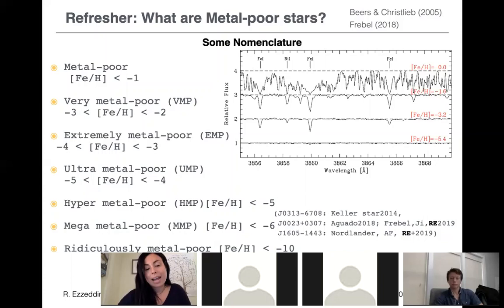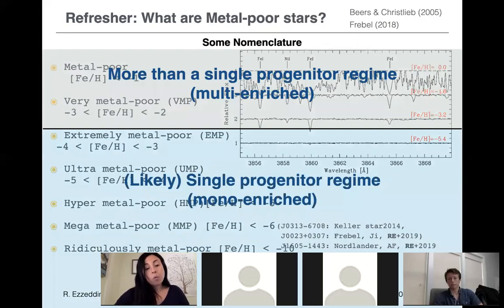The cosmos has gifted us with really nice mega metal-poor stars. For example, the Keller star discovered in 2014 had an upper limit of iron-to-hydrogen below minus seven. David Aguado discovered another one in 2018 that we followed up with high-resolution spectra. More recently, Thomas Nordlander discovered another mega metal-poor star with, for the very first time, a measured iron abundance below minus six. We know these gems exist and we are finding them, though it's difficult.